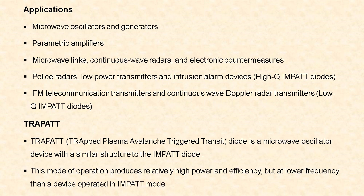Next let us see the applications of the IMPATT diode. They are used in microwave generators and microwave oscillators. They are also used in parametric amplifiers. IMPATT diodes find applications in microwave links, continuous wave radars, and electronic countermeasures. High quality factor IMPATT diodes are used in police radars, low power transmitters, and intrusion alarm devices. Low quality factor IMPATT diodes are used in frequency modulators, telecommunication transmitters, and continuous wave Doppler radar transmitters.